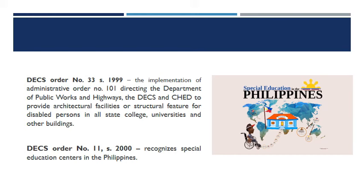Under DepEd Order No. 33, Series of 1999, there was the implementation of Administrative Order No. 101 directing the Department of Public Works and Highways, DepEd, and CHED to provide architectural facilities and structural features for disabled persons in all state colleges, universities, and other buildings. This is related to BP 344, which emphasizes the provision of architectural facilities or structural features for disabled persons in state colleges, universities, and public establishments.